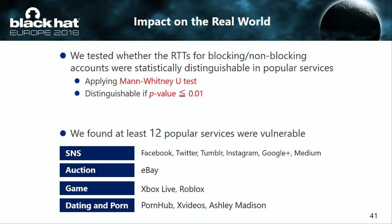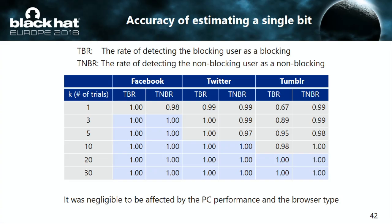Here I show the success rate of the attack. We conducted experiments to evaluate one-bit estimation accuracy, choosing especially popular services — Facebook, Twitter, and Tumblr. In this table, TBR is the rate of detecting a blocking user as blocking, and TNBR is the rate of detecting a non-blocking user as non-blocking. As you can see, accuracy improves as the number of iterations increases. Blocking and non-blocking states are perfectly estimated by iterating three times on Facebook, 10 times on Twitter, and 20 times on Tumblr.